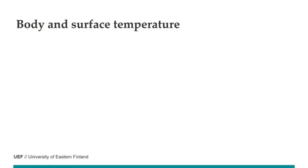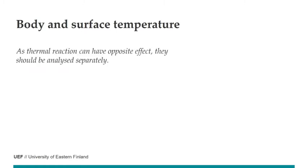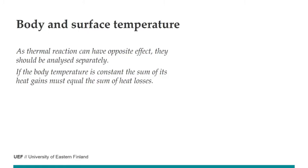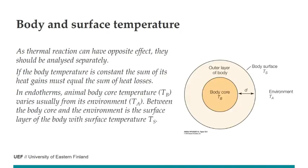Let's think about how we can calculate these different ways of heat transfer given a body temperature and an environment temperature, and how we can maintain body temperature. These thermal processes can have opposite effects — the rabbit gains heat from the sun but gives heat to the ground. If body temperature is constant, the sum of heat gains must equal the sum of heat losses. For example, if the rabbit has a high metabolic rate and gains energy from the sun and from the air, it must be evaporating more.